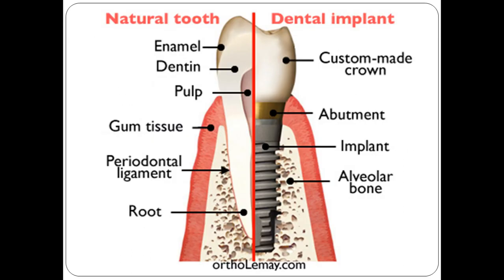The difference between a natural tooth and dental implants through diagrammatic presentation. In a natural tooth we have enamel, dentine, pulp, gum tissue, periodontal ligament, and root. In a dental implant, the components are a custom-made crown, abutment, implant, and alveolar bone.